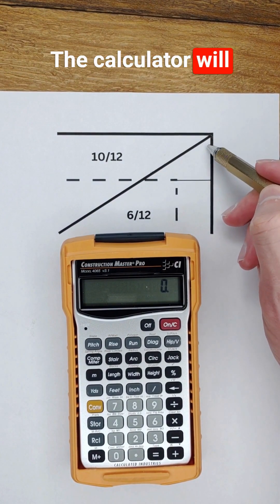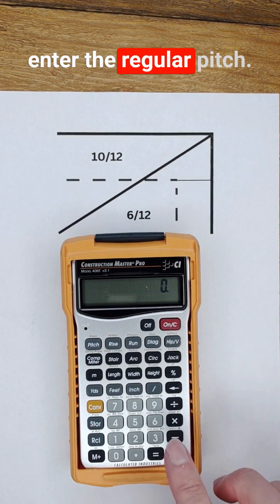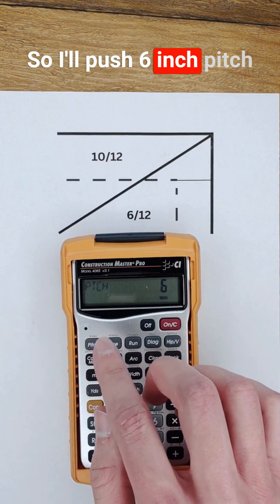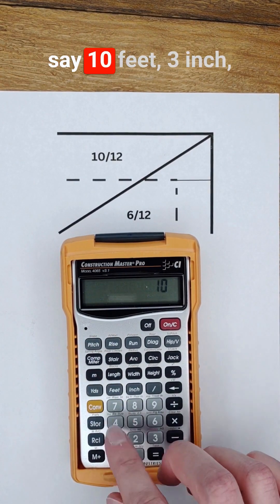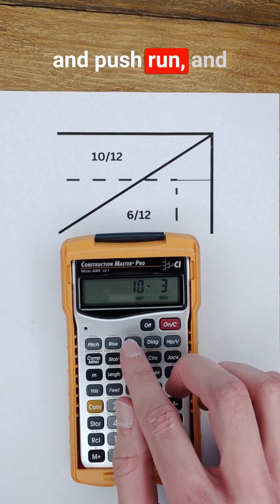The calculator will find that for me if I enter the regular pitch. So I'll push 6 inch pitch, and then the run, let's say 10 feet 3 inch and push run.